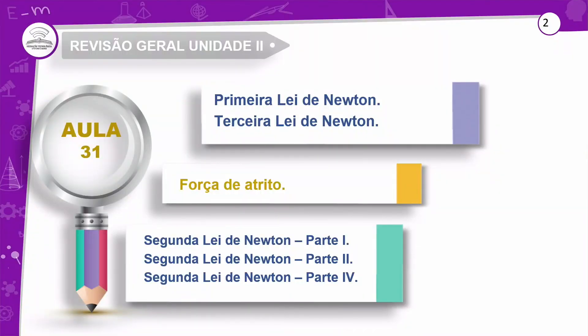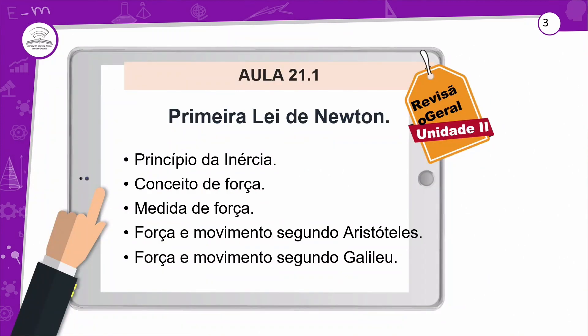Olha só a revisão geral da unidade 2 — o que nós temos? Lei de Newton, primeira e terceira lei; temos também força de atrito; questão do contra-movimento; e também vimos a segunda lei de Newton em algumas partes. Escolhemos a primeira, a segunda e a quarta parte. Nossa primeira lei, aula 21.1, é o princípio da inércia. Nós também falamos do conceito de força, medida de força, força e movimento segundo Aristóteles e também segundo Galileu — uma ideia diferente de movimento.